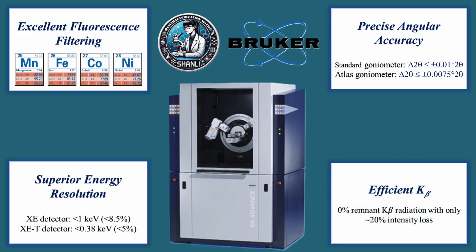The last feature is efficient K-beta filtering. The system achieves nearly 0% remnant K-beta radiation with only approximately 20% intensity loss when using the XET detector. This performance surpasses traditional K-beta filters, ensuring high-quality diffraction data with minimal intensity loss and improved peak-to-background ratios. K-beta filtering involves the elimination of unwanted K-beta radiation while preserving the intensity of the desired K-alpha radiation, which is crucial for precise and reliable diffraction analysis.